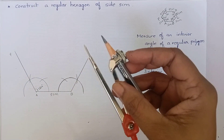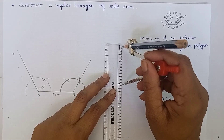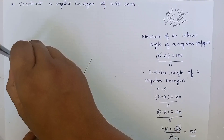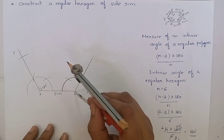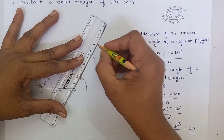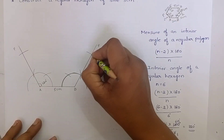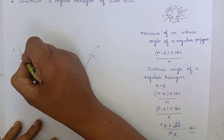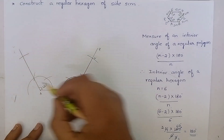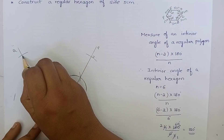Now measure 5 cm using the ruler and compass. Keep the compass at point A and cut an arc. Keep the compass at point B and cut an arc. Name this point as C and name this point as F.